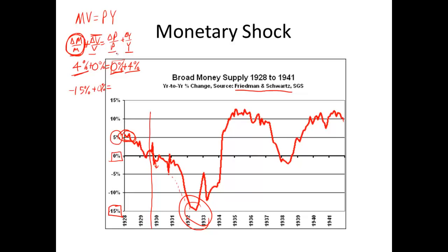Output is going down, prices are going down about 10% — massive deflation. Velocity is probably going down maybe 5% as well. We've got a minus 25% decline in total nominal spending, about 10% deflation — so we have to account for roughly a 15% decline in output. This is a massive aggregate demand shock in the form of a monetary collapse, combined with a velocity shock.